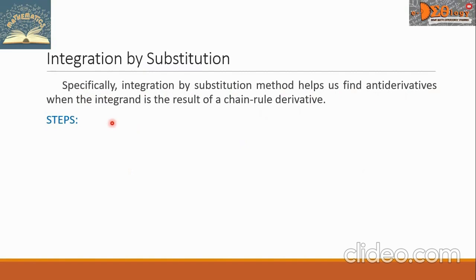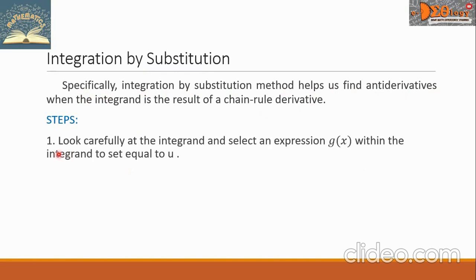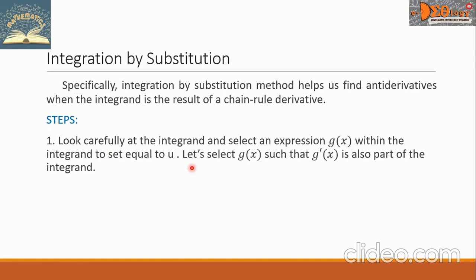Here are the steps. Step 1: look carefully at the integrand and select an expression g of x within the integrand to set equal to a variable u. Let us select g of x such that g prime of x is also part of the integrand.